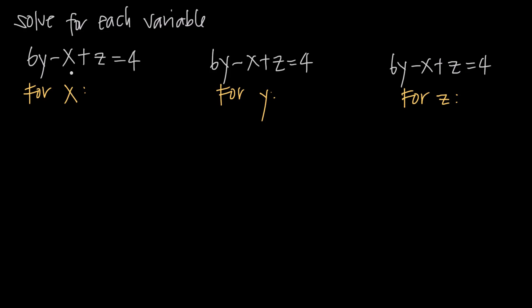We see our x right here, and what we want to do is get it by itself. So the first thing we can say is we're going to subtract 6y from both sides. Remember, anything we do to one side of the equation, we always have to do to the other side of the equation. That's called balancing equations or keeping the equation balanced.